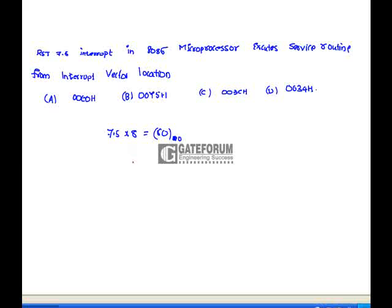Converting 60 decimal to hexadecimal: 48 means 12, which is represented as C in hexadecimal, giving 3C. Since the address in the 8085 is 16-bit, we represent it as 003C in hexadecimal form. Therefore, option C is correct.